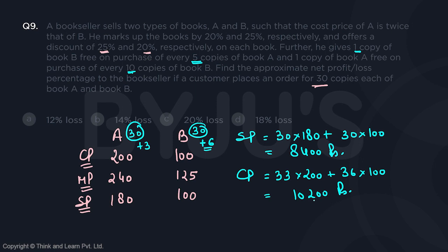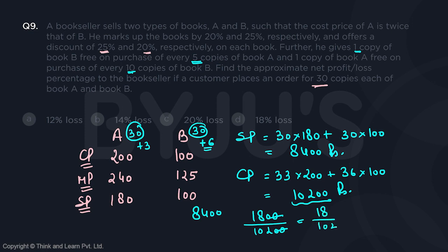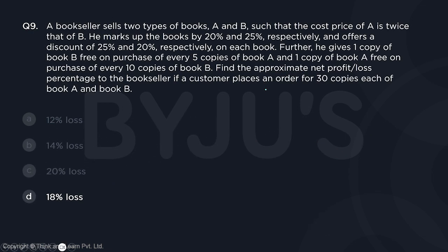His total cost price is 10200 and his total selling price is 8400. So there is a loss of 1800 rupees on a cost of 10200. That gives us 18 divided by 102. If it were 18 by 100, it would be 18% loss — this is very close to that. Since the question asks for the approximate answer, the answer is approximately 18% loss, which is option D.